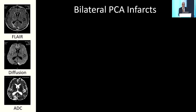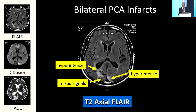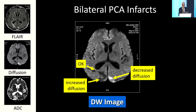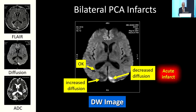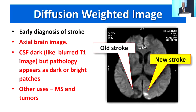Coming to PCA infarct: on axial FLAIR this patient shows bilateral occipital lobe lesions — one side hyperintense, the other showing mixed signals. On diffusion-weighted imaging, you can clearly see differences between the two sides: decreased diffusion appearing brighter indicates acute infarction, and increased diffusion indicates an old infarct. So diffusion-weighted images are useful in early diagnosis of stroke.